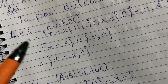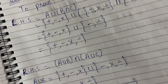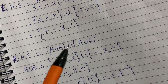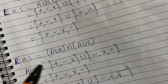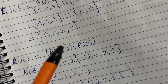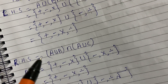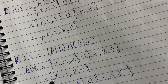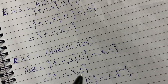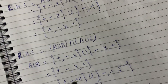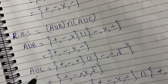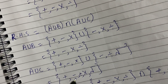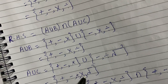Now we have the right hand side: (A ∪ B) ∩ (A ∪ C). There are two brackets. First, find A ∪ B, which gives {+, -, ×, ÷}. Then find A ∪ C, which gives {+, -, ÷, ×, √}. Write all elements together for each union.